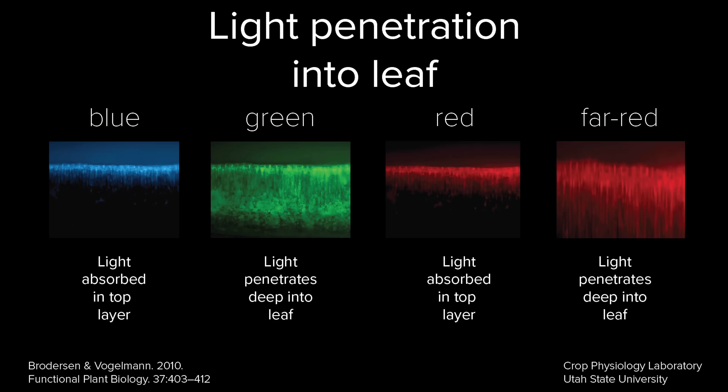If far red is less efficient than the other spectrum ranges readily available from our grow lights, why would we want to add it? To understand that we need to understand the characteristics of far red light. One key characteristic is that it will penetrate deeper and through the leaf. Looking at this graph, thanks again to Bruce Bugbee from Utah State University, the studies show that far red penetrates through the leaf.